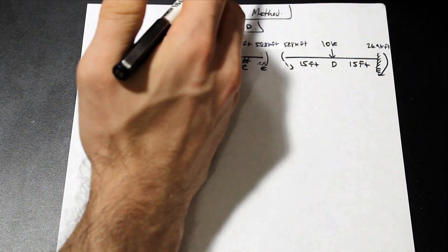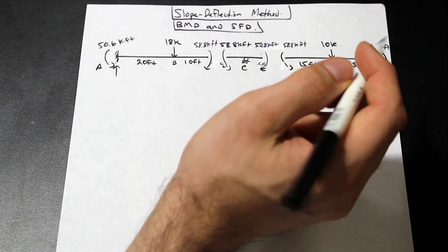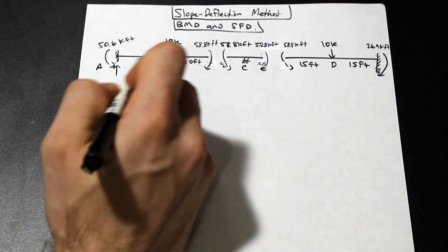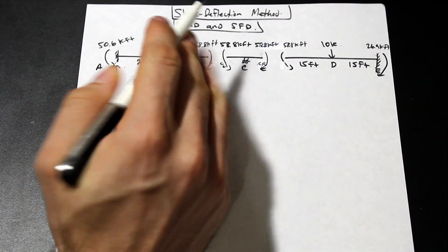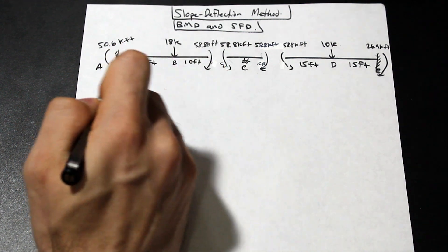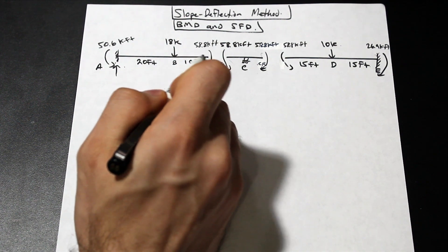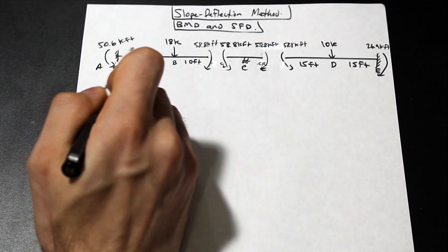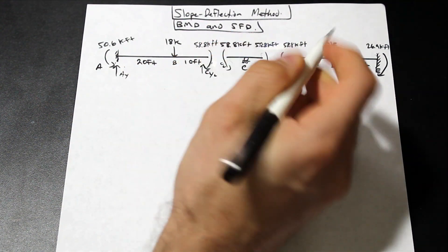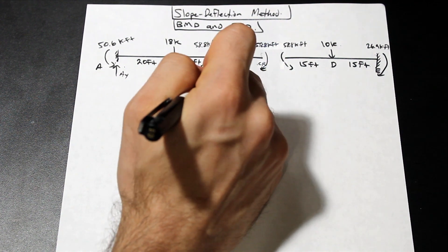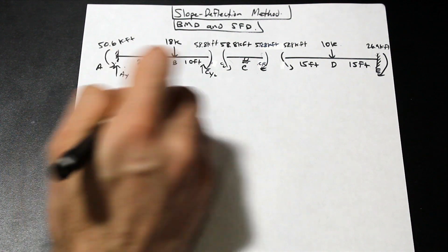The beam is essentially cut just to the left of C — that's good to note. So the first step is we're going to solve for the shears on the ends of the cut beams. Let's analyze section AC first. We have 50.6 kip-feet and 58.8 kip-feet as moments on the ends, along with reaction AY and reactions CY-left and CY-right.